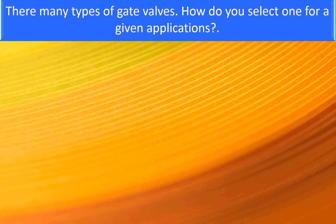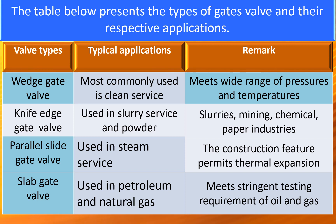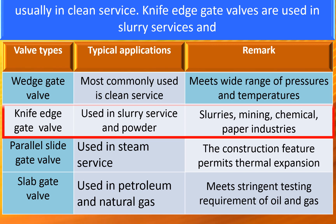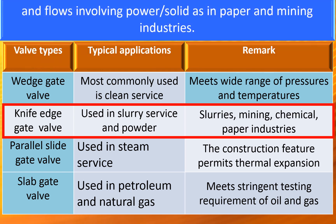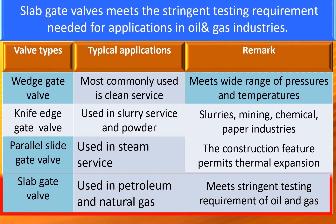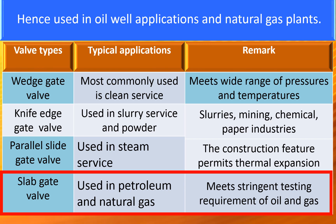There are many types of gate valves. The most commonly used type for general application is the wedge gate valve, usually in clean services. Knife wedge gate valves are used in slurry services and flows involving powder or solids, such as in paper and mining applications. Parallel gate slide valves have thermal expansion capability and are used in steam services. Slab gate valves meet stringent testing requirements needed for applications in oil and gas industries, oil-well applications, and natural gas plants.